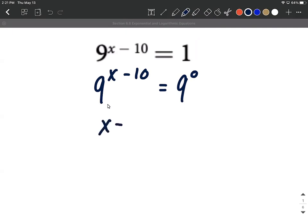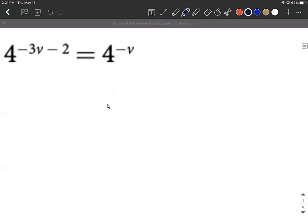Now we can drop the bases, set the exponents equal. Pretty easy equation to solve down. We'll add 10 to both sides, 0 plus 10 is going to make 10.